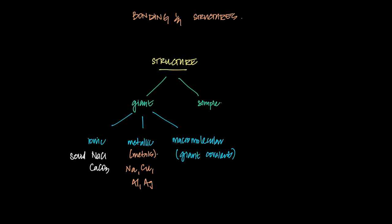And macromolecules — which ones have you seen or at least seen the structure of? One is considered to be diamond, there is silica also, there's also graphite, there's also things called graphene, which we'll discuss later.